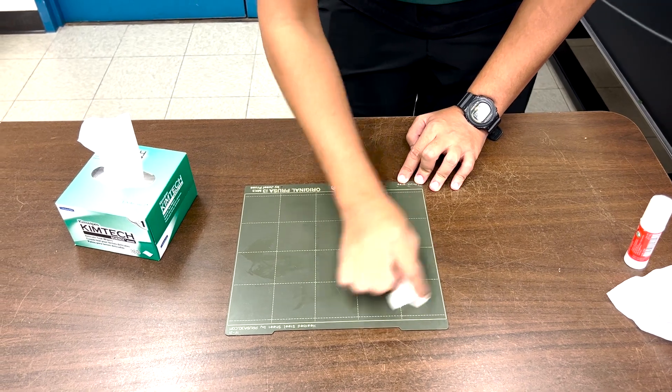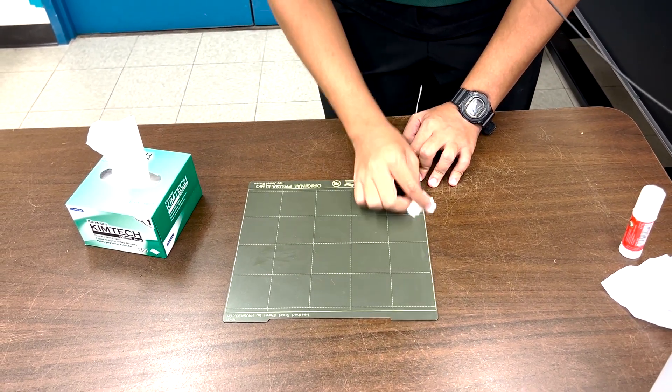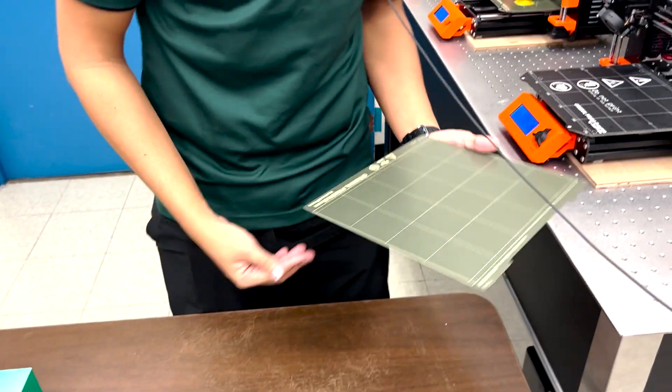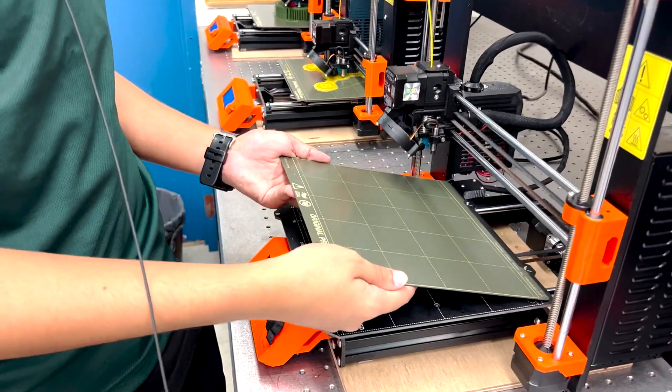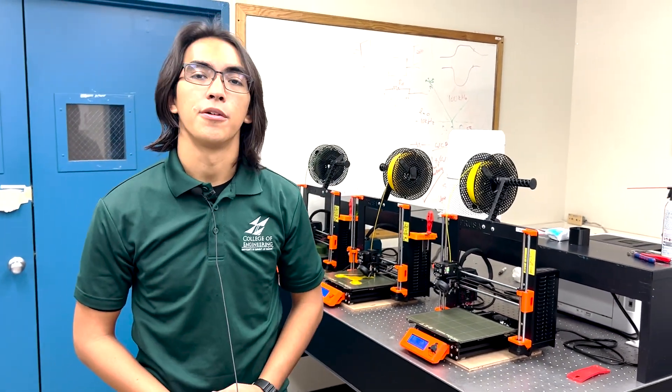After visual inspection and seeing that there's no residue left on the build plate, place it back onto the 3D printer. That is how you rejuvenate the build plate of a Prusa 3D printer.